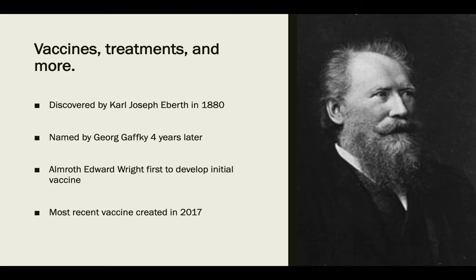Carl Joseph Eberth was named the first to discover the bacillus to cause typhoid fever in the year 1880. This was confirmed just four short years later by a man called George Gafke, who named the bacillus what is known today as Salmonella enterica. Almroth Edward Wright created the first vaccine against typhoid fever, and it was approved for military uses to protect the men at war. This was largely due to the fact that soldiers at this time typically died more so as a result of typhoid fever than from being killed during a war battle.